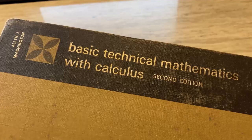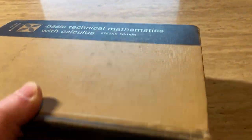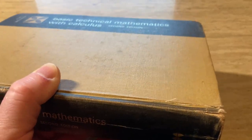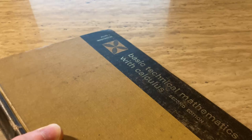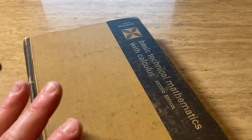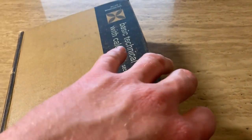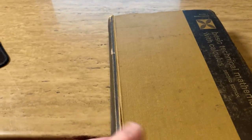So there it is. Basic Technical Mathematics with Calculus by Alan J. Washington. Great book that I think has a lot of good information. And it's a good book to learn just mathematics with because it takes that approach where it doesn't really assume that you know a lot of math. The audience of this book, again, it's just people who just know basic algebra and geometry. So yeah, hope it's been helpful. Good luck.